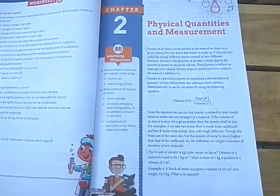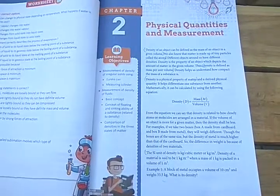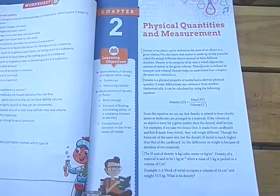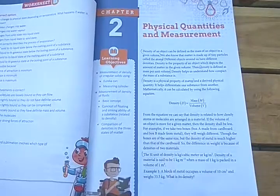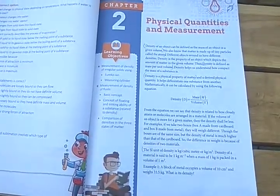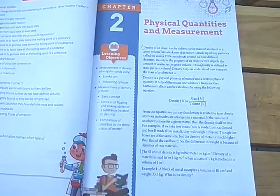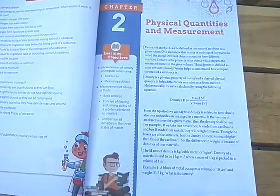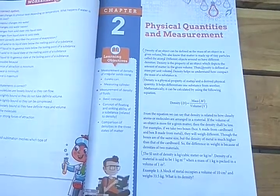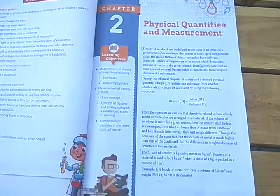One box is made from cardboard and the other from metal. They are the same size but their densities are different. The difference in weight is because of the density of the two materials. The SI unit of density is kilogram per cubic meter — kg per meter cube.